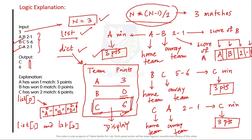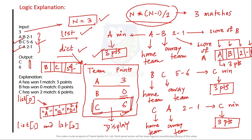The second condition is if P[0] is less than P[1], then the away team (at index 1) gets three points. For example, in 'B C 5-6', 5 is less than 6 so C gets three points. The draw case handles when both scores are equal, allocating one point to each team — one point to position 0 and one point to position 1.